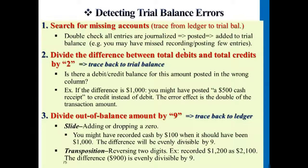Here's an example. Let's say the company generated cash — received cash based on providing service revenue to a customer, worth $500. For this transaction we will be debiting cash because we're receiving cash, and crediting service revenue. This is the correct case. But let's say we mistakenly posted this $500 to the credit side for cash, and also posted service revenue $500 under the credit side.